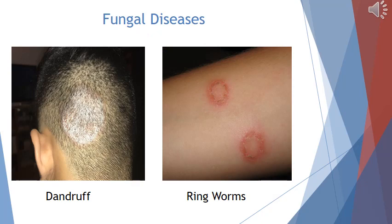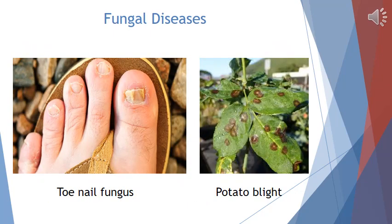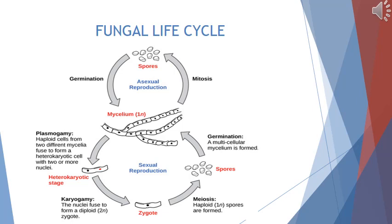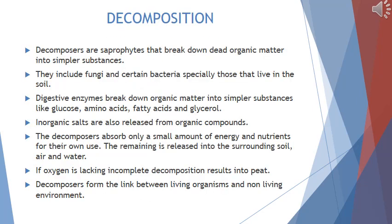Fungi are not only beneficial but also cause diseases in human beings, such as dandruff, ringworm, and toe nail disease. Potato blight disease is also caused by fungi. Fungi also reproduce by asexual and sexual methods. In asexual reproduction, the mycelium produces spores that germinate to form a new mycelium. In sexual reproduction, haploid cells from two different mycelia fuse to form a heterokaryotic cell; the nuclei inside fuse to form a diploid zygote (2n), which then undergoes meiosis to produce haploid spores that germinate into a new multicellular mycelium.